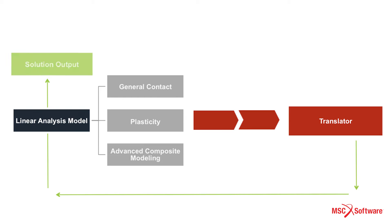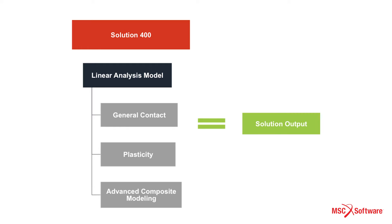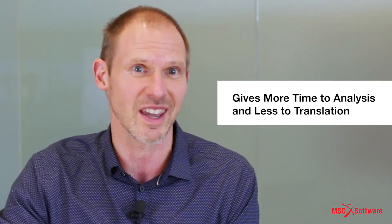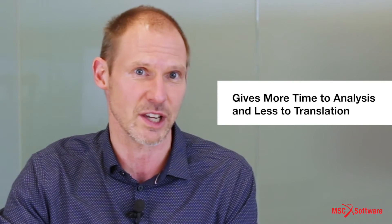With MSC Nastran Solution 400 you can use that base model and basically just add the capability you need, like general contact or more advanced composite modeling, and continue with the same model. That will save you a lot of time — it gives more time to the analysis work and less time to the boring translation work.